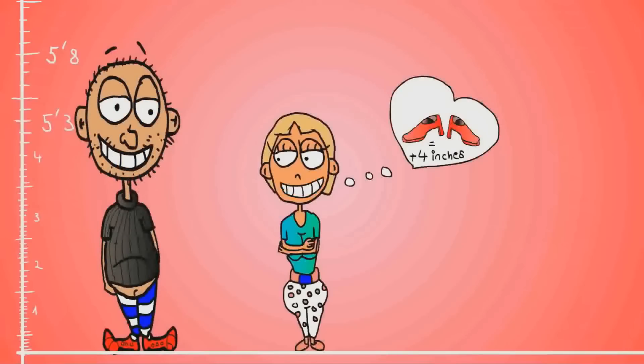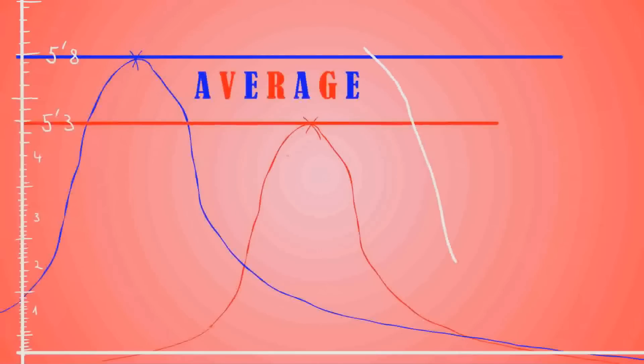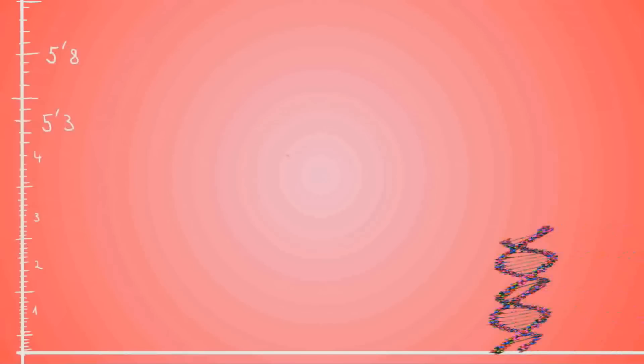The best way to show and understand height is actually through a bell curve. A bell curve shows the distribution of heights with the average at the peak at the top and tapers off towards the edges.